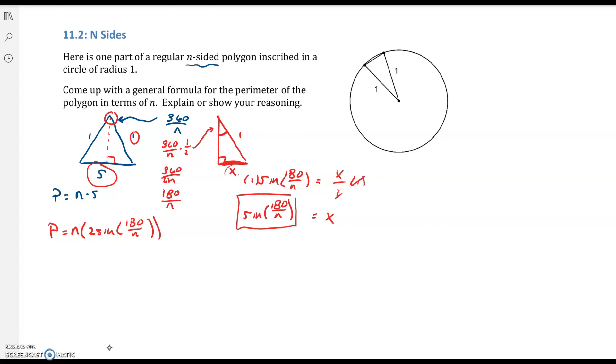N times this whole thing - the perimeter, if I rewrite this, is 2 times N times sine of 180 over N. And remember, I'm just using the commutative property of multiplication here, which says I can multiply N times 2 times sine of 180 over N. It doesn't matter which one I write first.